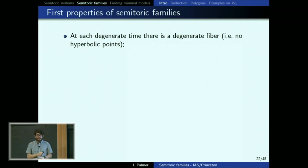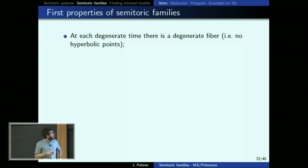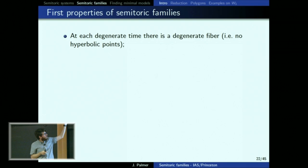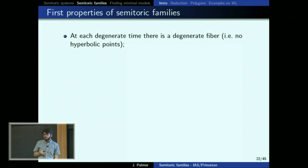The reason I call them degenerate times: a semi-toric family never has any hyperbolic points. Thinking about it like Morse theory, if you have a function with a hyperbolic point and perturb it, it will still have a hyperbolic point — it's an open condition. So if it's semi-toric for all but finitely many values of t, it can never have hyperbolic points at those isolated non-semi-toric times. The only way for it to fail to be semi-toric is to have a degenerate fiber.